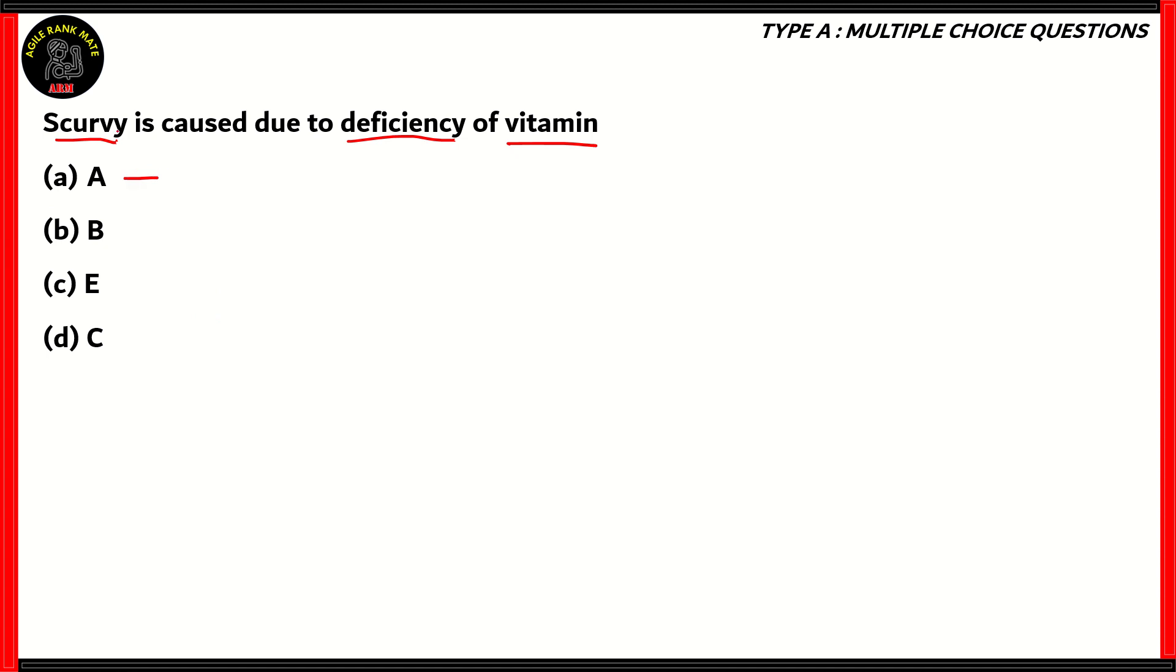Option A is deficiency of vitamin A. That causes night blindness. Therefore, option A is incorrect. Scurvy is where you experience bleeding of gums, so night blindness is totally different. Now, option B is vitamin B. Deficiency of vitamin B causes another disease called beriberi and not scurvy. So option B is incorrect.